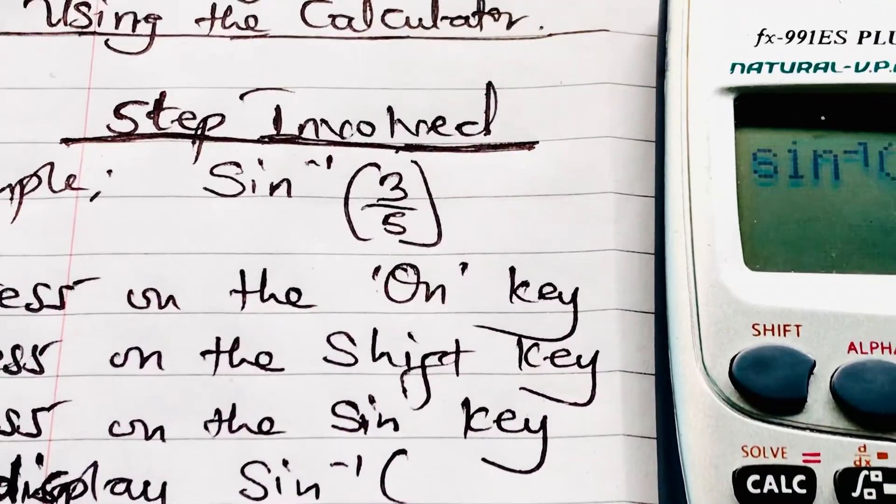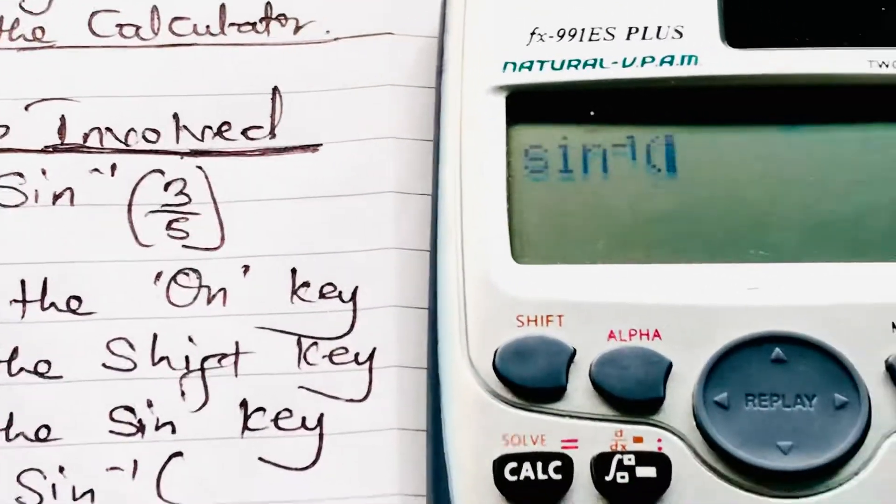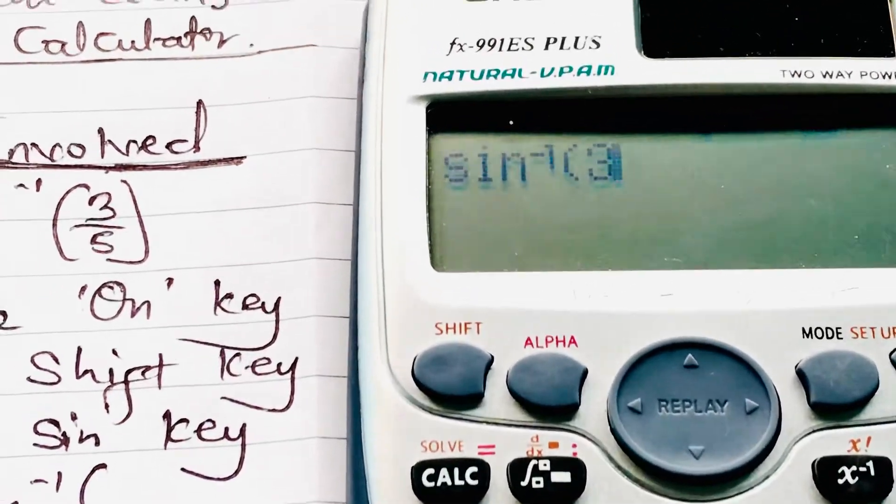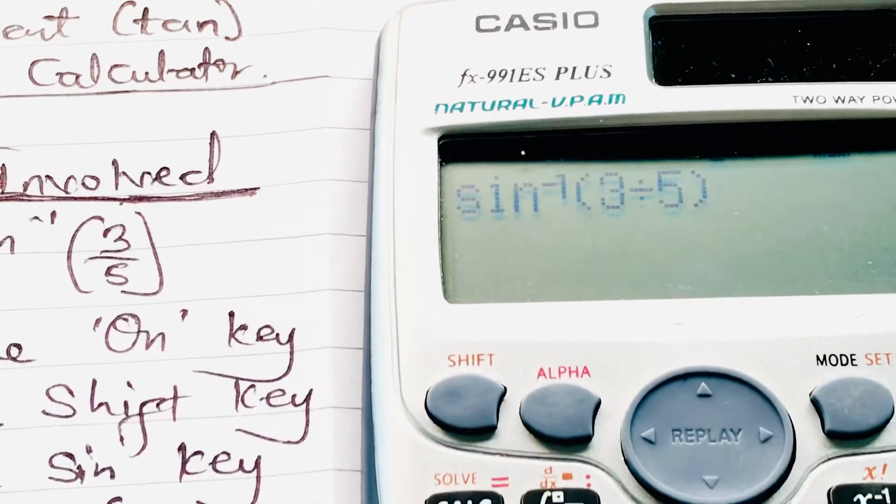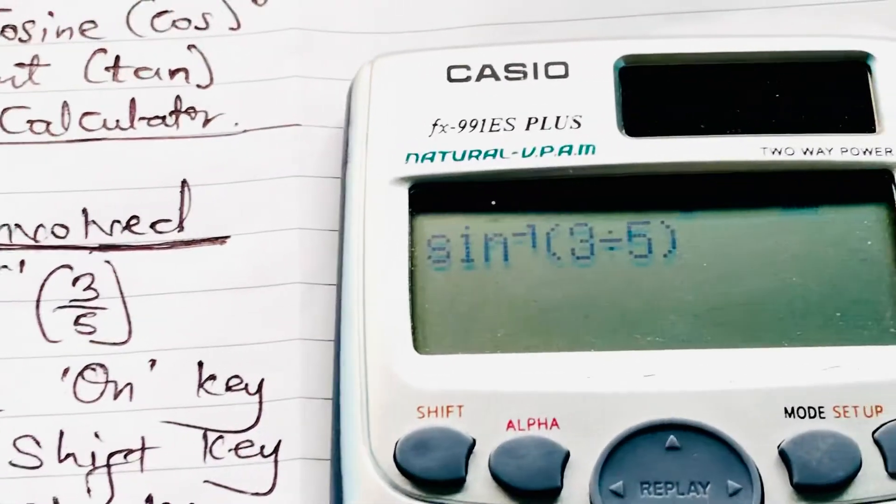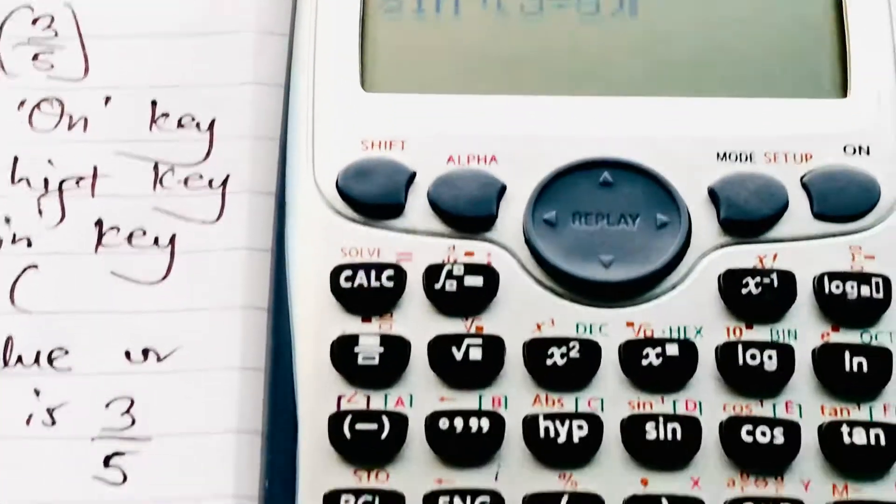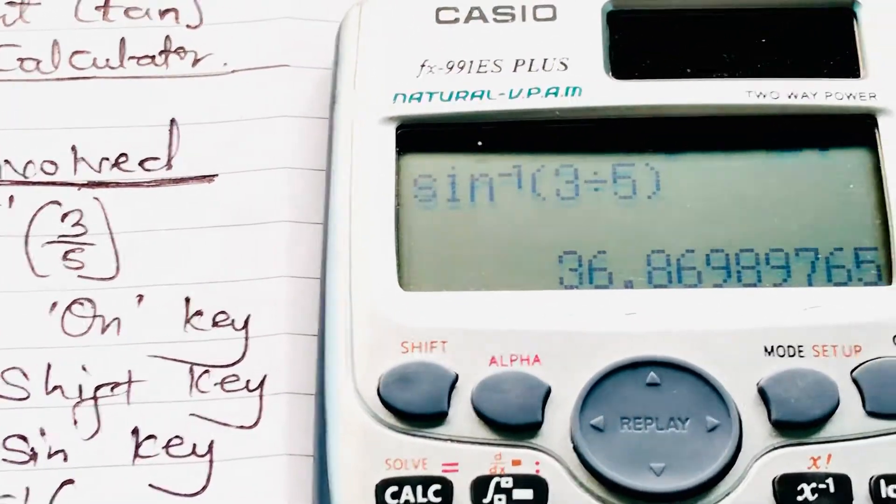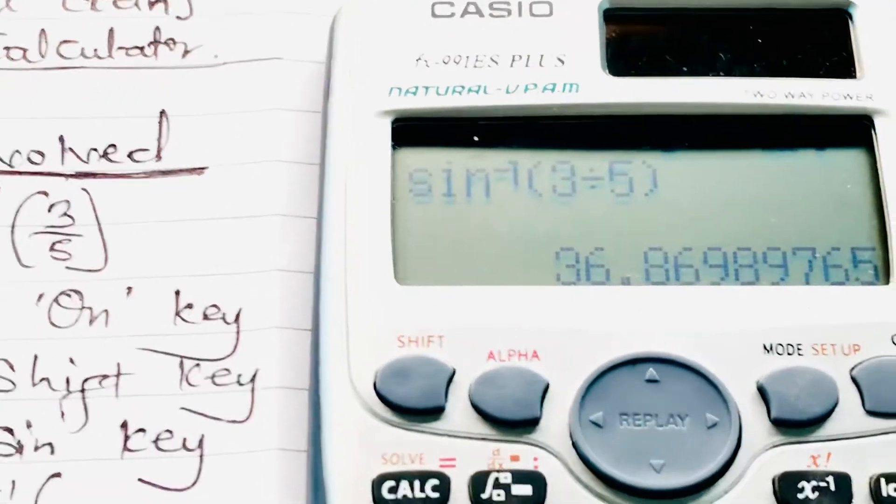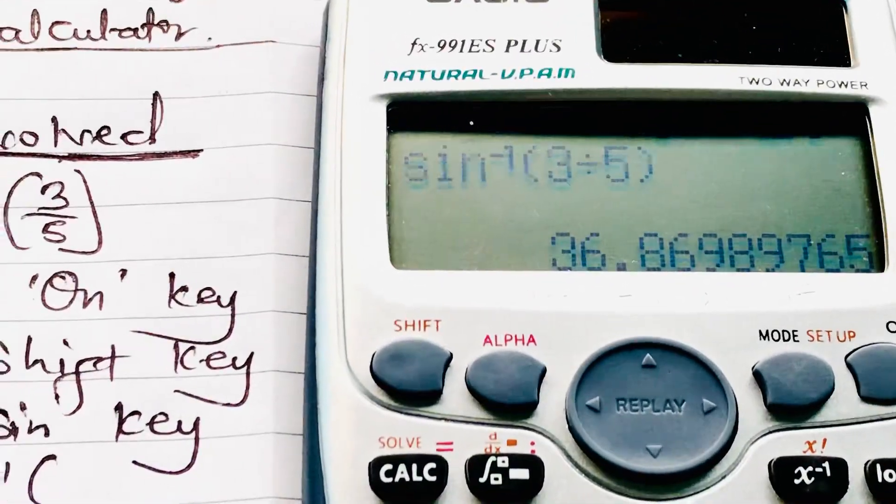So we punch 3 divided by 5 and close our brackets. Then we press on the EQUAL sign to display our answer.